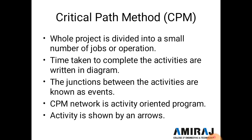In a CPM diagram, an arrow is drawn and the time duration is given above the arrow in the form of days, weeks, months, or years. Below the arrow, the activity description or name is given, like excavation or brick work. The junction between activities is known as an event, denoted by numbers like 1, 2, 3, 4, while activities are denoted by alphabets A, B, C, D. CPM network is an activity-oriented program.